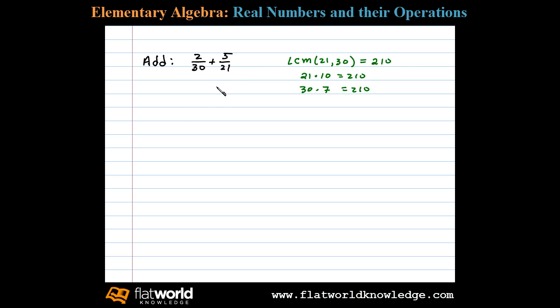that as a denominator. To do this, we're going to multiply by a special form of 1 to get equivalent fractions. In this case, I'm going to multiply 2 over 30 by 7 over 7, and we're going to multiply 5 over 21 by 10 over 10. This will give us equivalent fractions with 210 as a denominator.